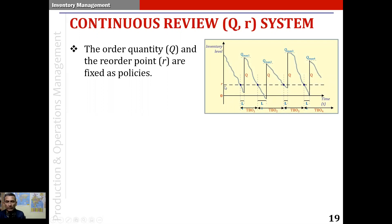When the inventory position reaches the reorder point, a fresh order is placed. The replenishment arrives after a lead time of L1 in the first cycle. The quantity Q is fixed, so Q is added to the inventory and the inventory position rises to Q-max-1, and the next cycle begins. The order quantity Q is the same each time we order, and the reorder point is the same.